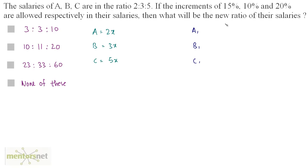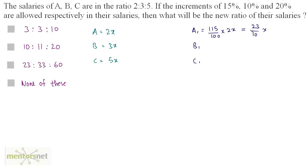We have to calculate the ratio of these new salaries. Let us calculate the new salary of A — it is a 15% increase in the previous salary. So 115% of A, which means (115/100) times 2x, and this comes out as 23/10 x when you cancel out terms and solve.